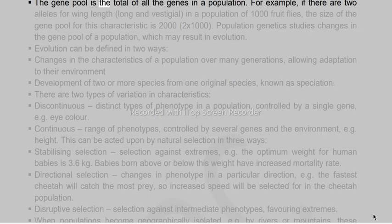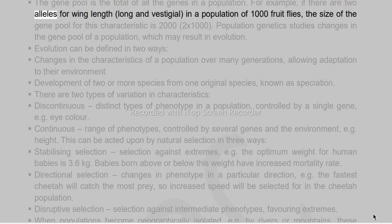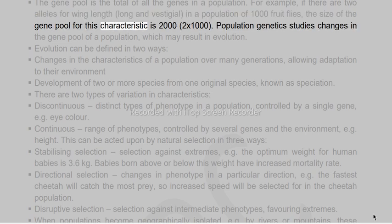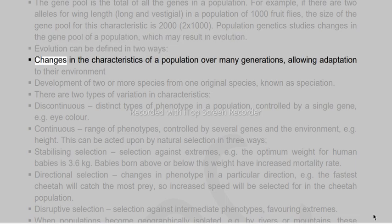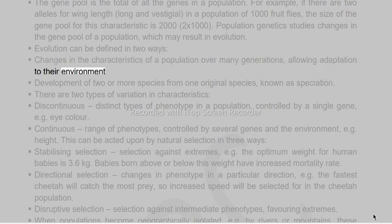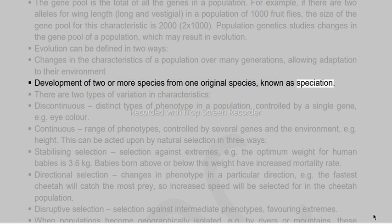The gene pool is the total of all the genes in a population. For example, if there are two alleles for wing length — long and vestigial — in a population of 1,000 fruit flies, the size of the gene pool for this characteristic is 2,000 (2 × 1,000). Population genetics studies changes in the gene pool of a population, which may result in evolution. Evolution can be defined as changes in the characteristics of a population over many generations or as the development of two or more species from one original species, known as speciation.